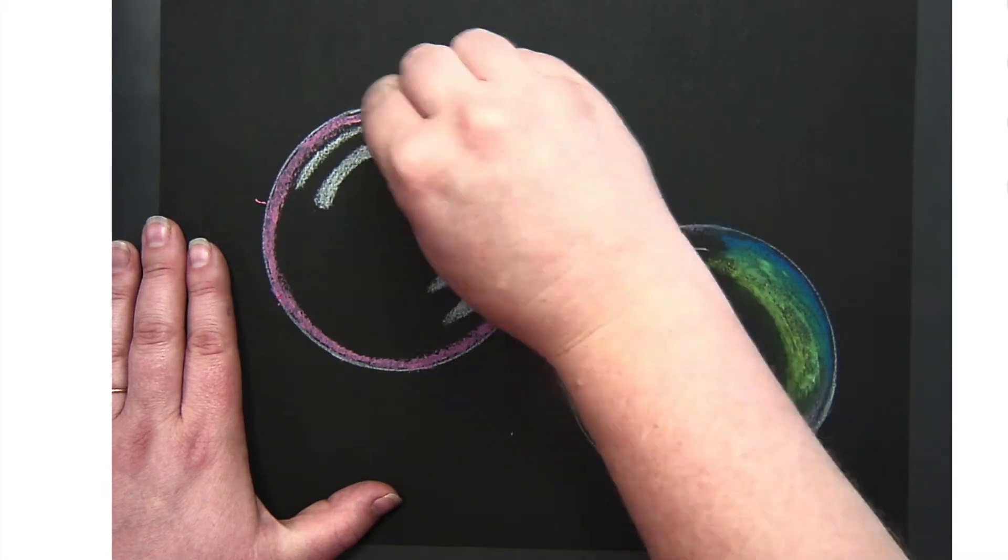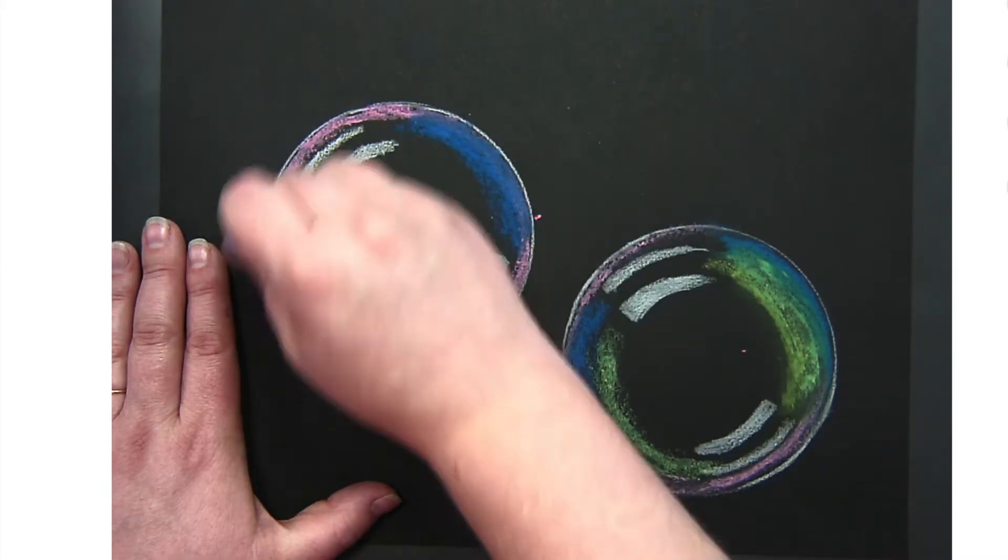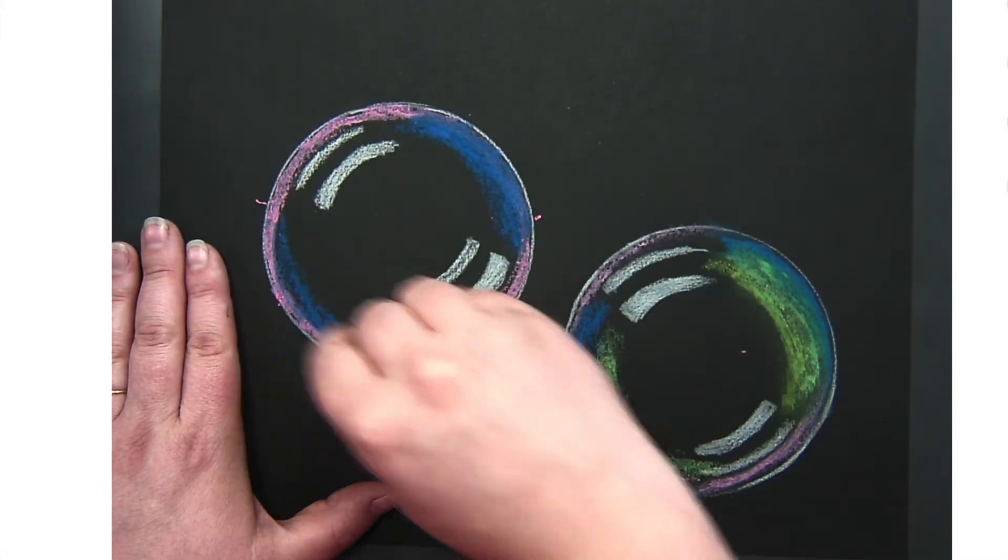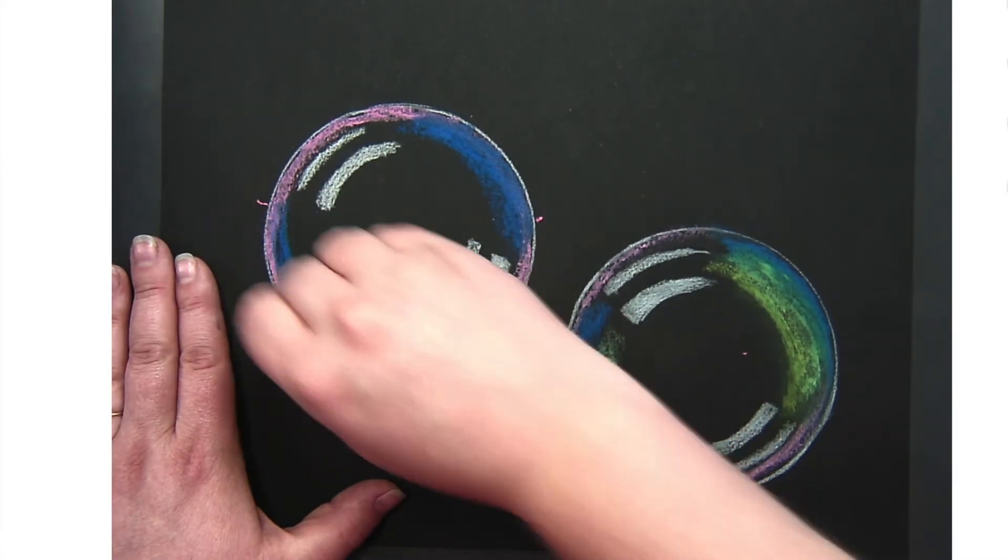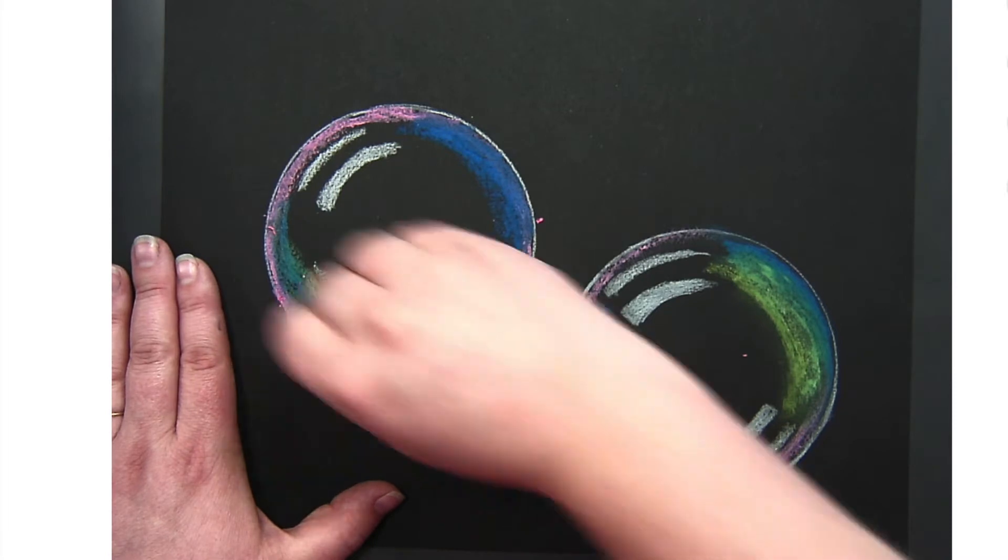Next I'm going to add some blue right next to the pink, maybe even overlapping a little bit. Then I'm going to add some green as well to create more of that rainbow effect.